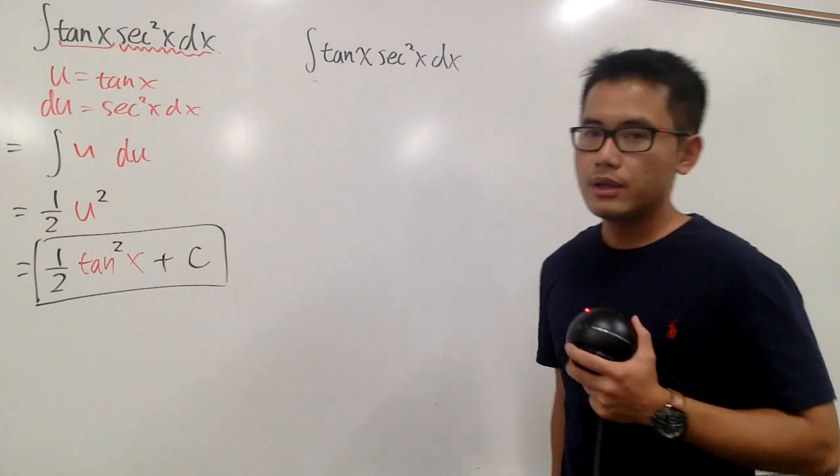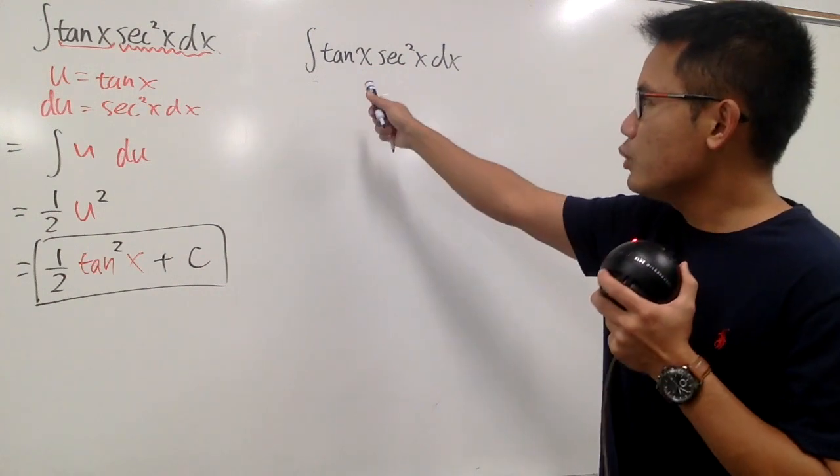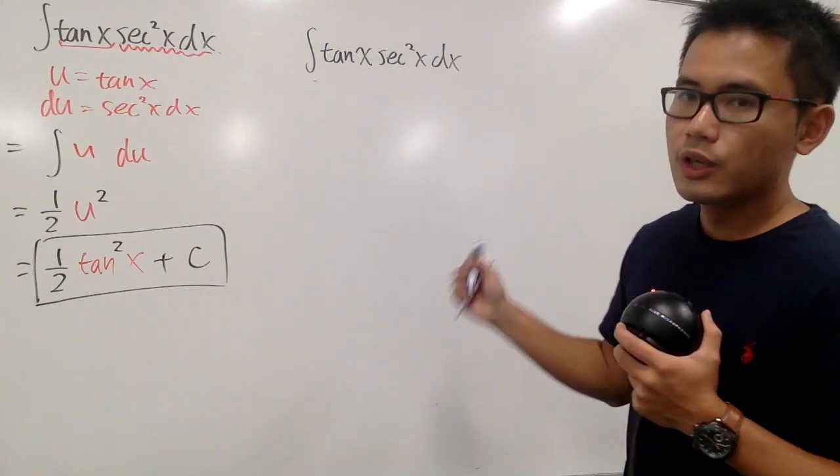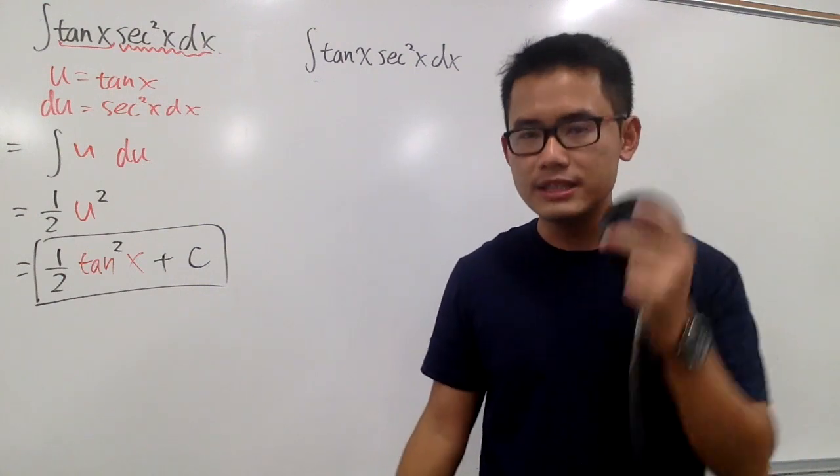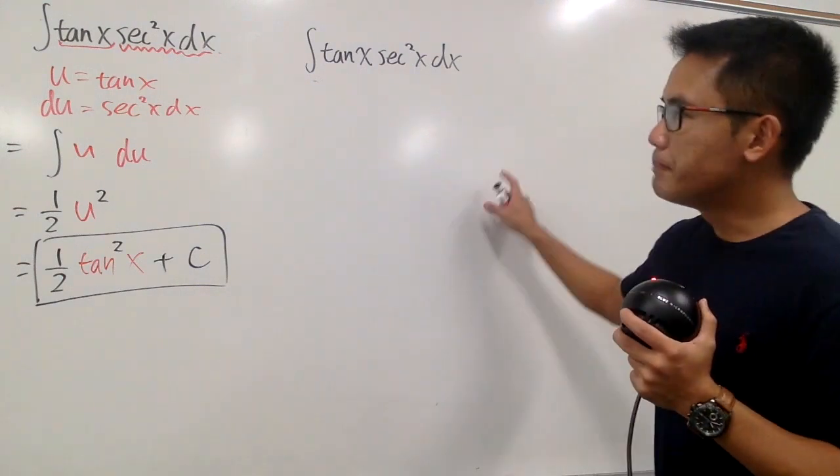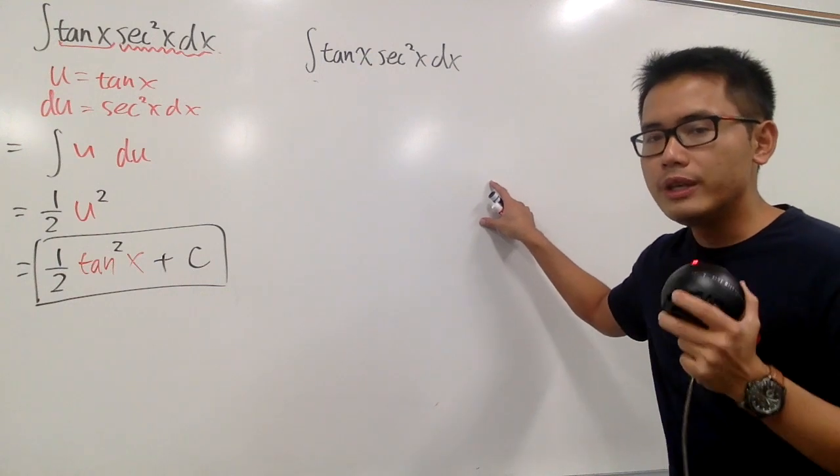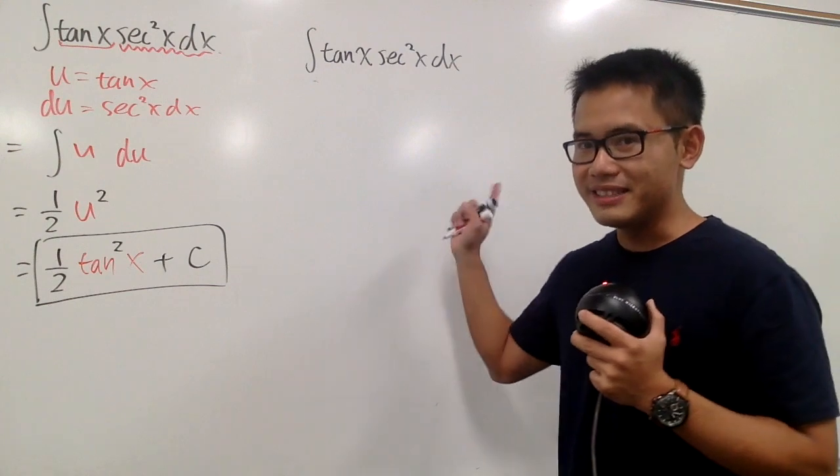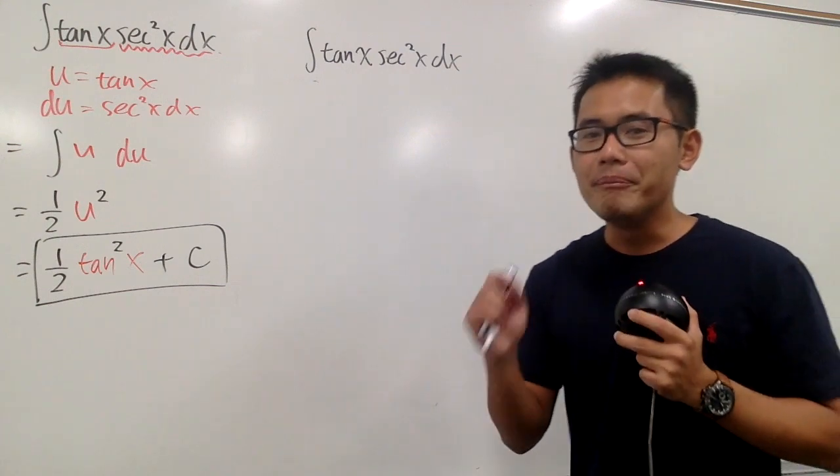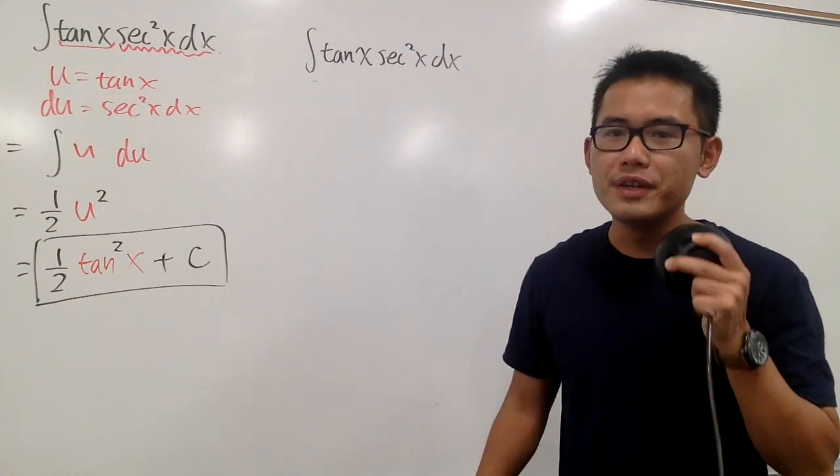And now, let's check this out. Remember, this is the integral of tangent x times secant squared x. So technically, we have two functions: tangent x and also secant x. Is it possible for us to let u equal to secant x? Well, in this case, yes, but we have to just do it carefully. Because you have to know the derivative of secant x is tangent x times secant x.